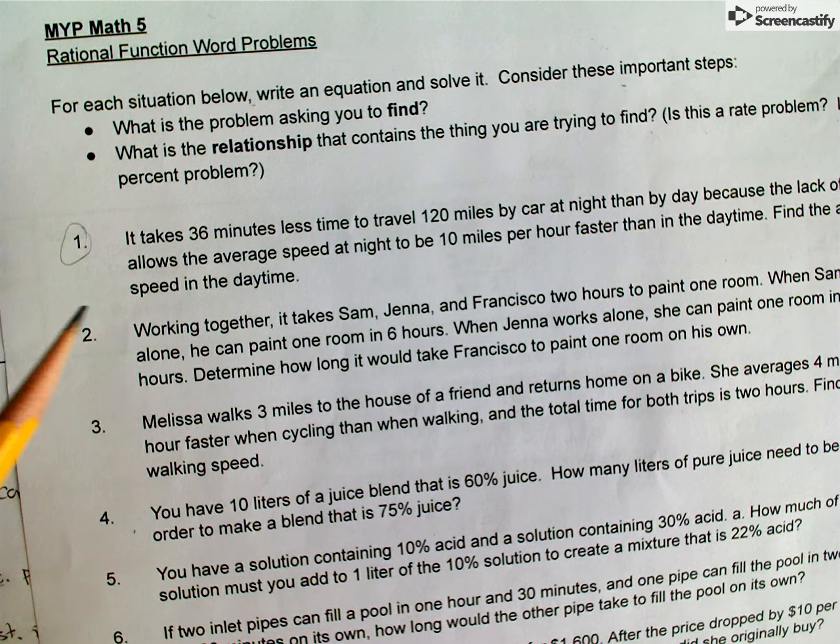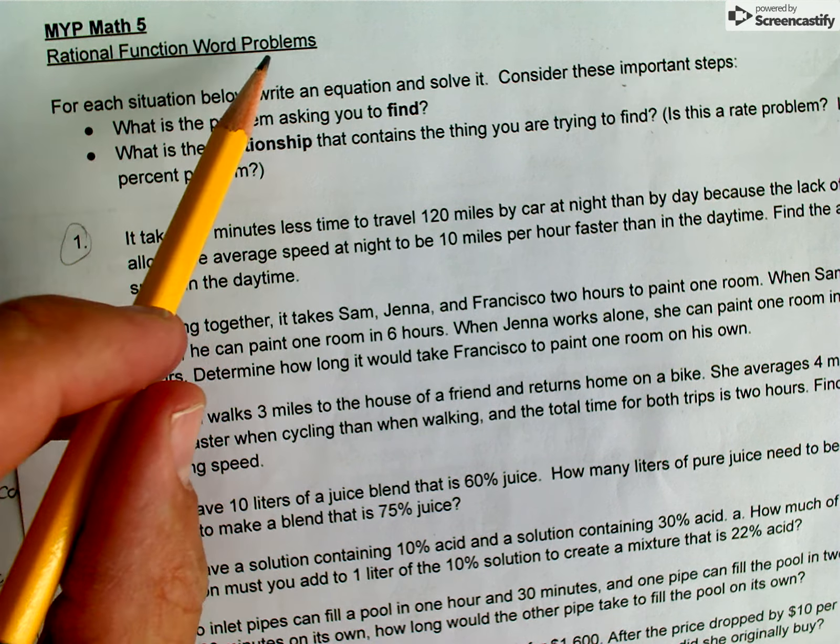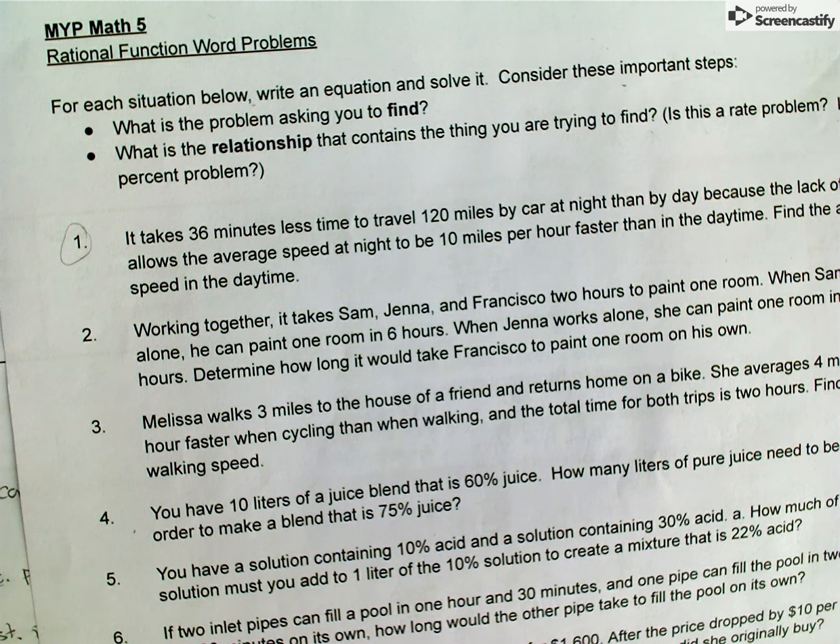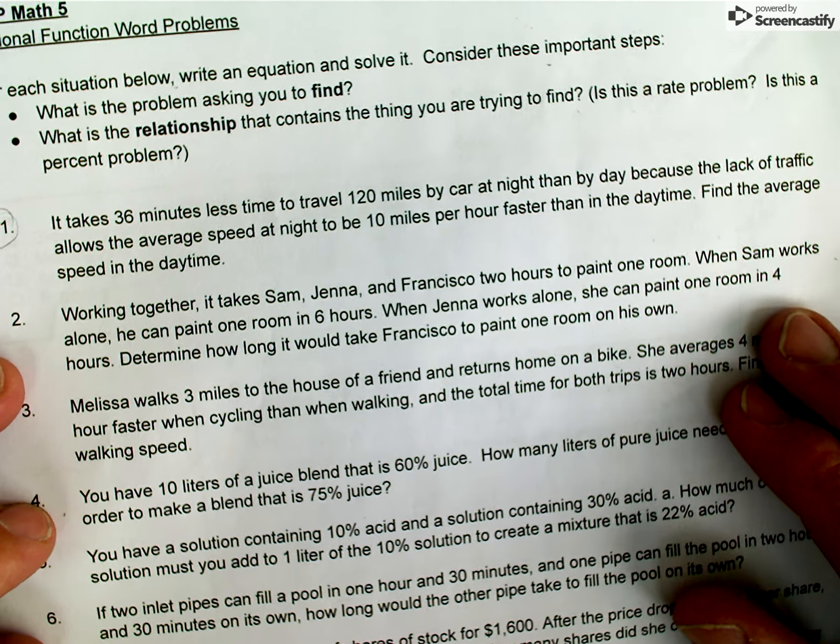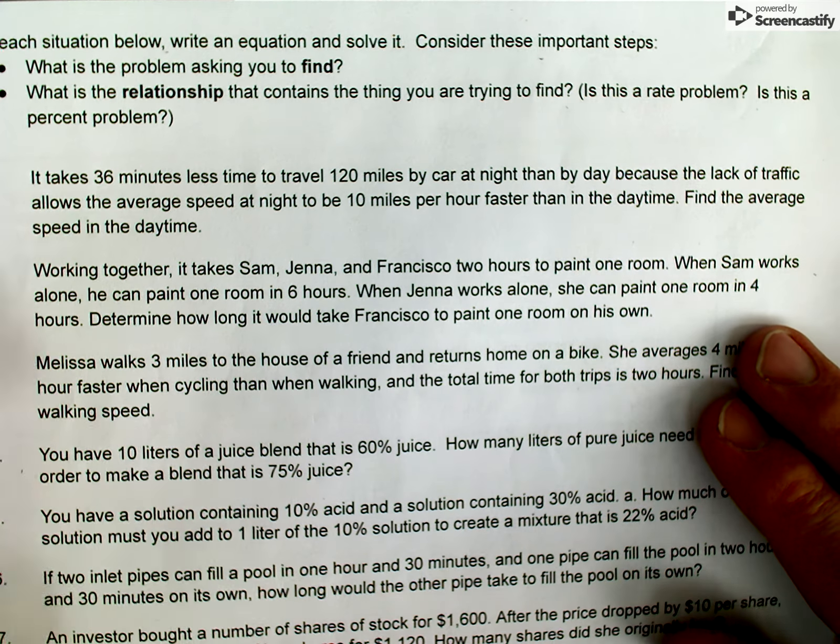I'm going to work out this first problem on the rational functions word problem set to give an example of how I think through these types of problems - word problems in general and also word problems that end up giving us rational functions that we have to solve. So let's just take a look at this first problem.